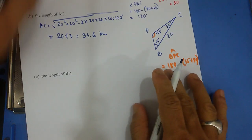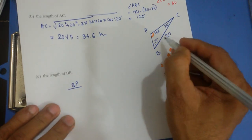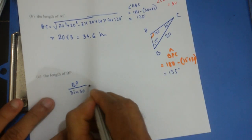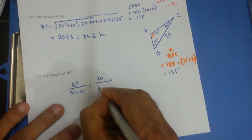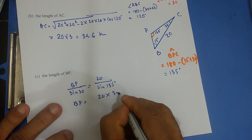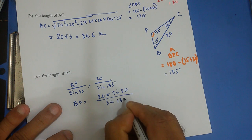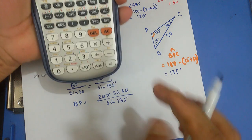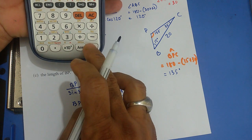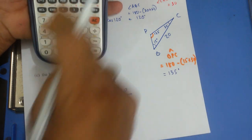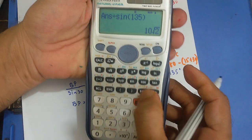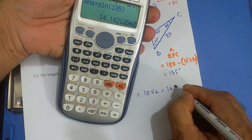Now we are ready to do. So BP over sine 30, and then I have 20 over sine 135. So BP equals 20 times sine 30 over sine 135. That's going to be 20 times sine 30 divided by sine 135. And I got 10 root 2 or it's actually 14.1 kilometers.